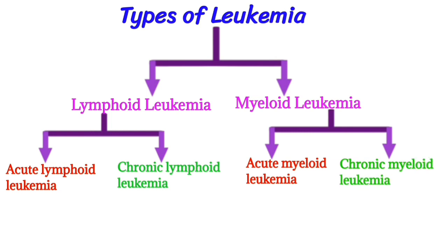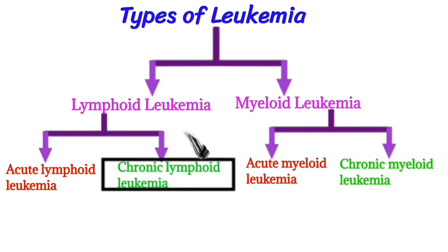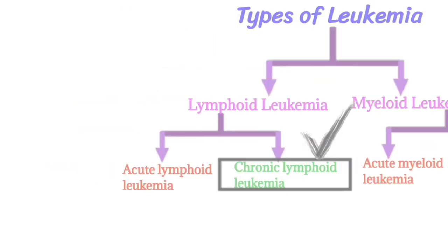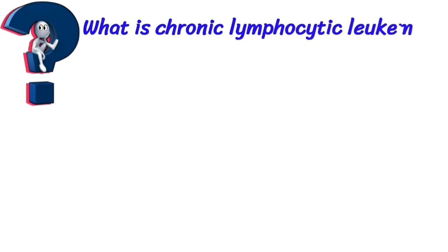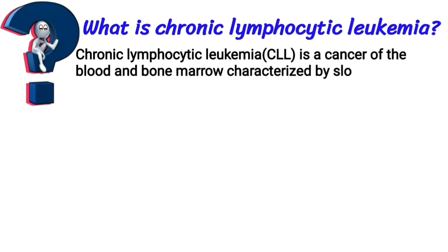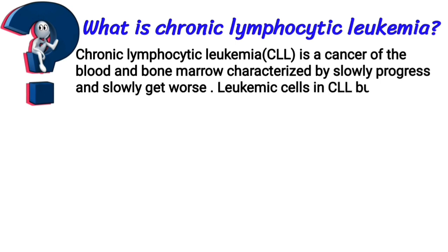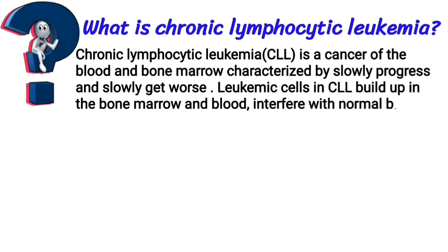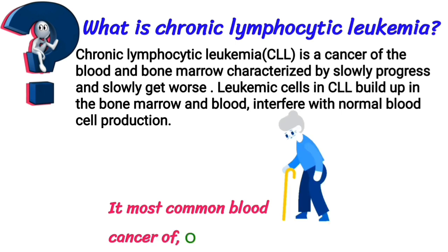Today our topic is chronic lymphoid leukemia. Definition: Chronic lymphocytic leukemia (CLL) is a cancer of the blood and bone marrow, characterized by slowly progressing leukemic cells. In CLL, cells build up in the bone marrow and blood, interfering with normal blood cell production. It is the most common blood cancer of older adults, age greater than 60 years.